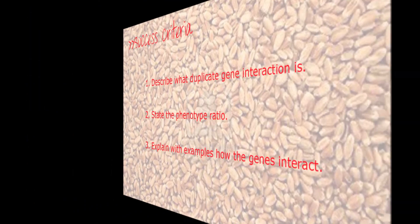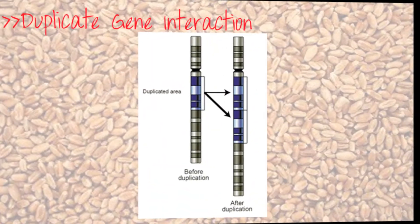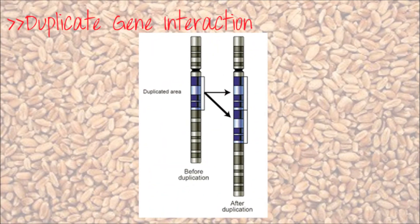Gene duplication is any duplication on a region of DNA that contains a gene. The picture on your screen shows that a section of DNA has been duplicated so that there are two parts containing the same code.